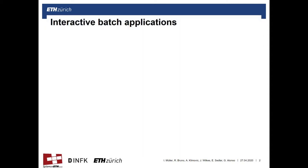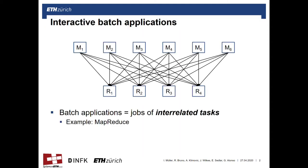With interactive batch applications we mean the following. An application is a batch application if it consists of jobs of interrelated tasks. MapReduce is a good example to explain this concept. The set of reduce tasks in the second phase of the program depends on the output of the set of mapped tasks in the first phase and can only start when those tasks are finished.